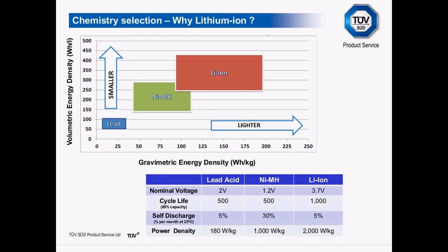Why do design engineers choose lithium-ion to power their products? One reason is energy density, which is a measure that can be made to compare battery chemistry to aid designers to choose the appropriate battery chemistry for their application. The two main parameters are gravimetric energy, calculated by capacity divided by weight, and volumetric energy, calculated by capacity divided by volume. For a portable application such as a mobile phone, you are looking for a high energy density, meaning the battery can hold energy and have a long run time, resulting in a lighter, smaller battery compared to another chemistry of similar capacity.